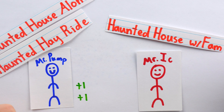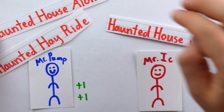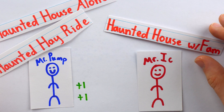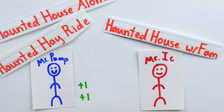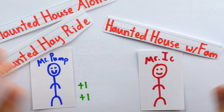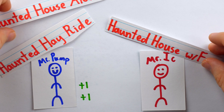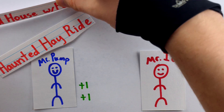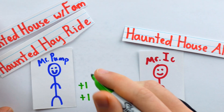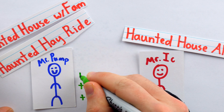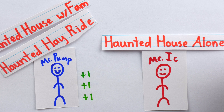But then the villainous Mr. Pump says, 'Oh Mr. Ick, would you rather go to the haunted house alone or go with your family? You're not a chicken, are you? Bawk bawk bawk.' And Mr. Ick gives Mr. Pump his ticket for the haunted house with the family and a little bit of money to get his preferred option — to show off his bravery and go to the haunted house alone.